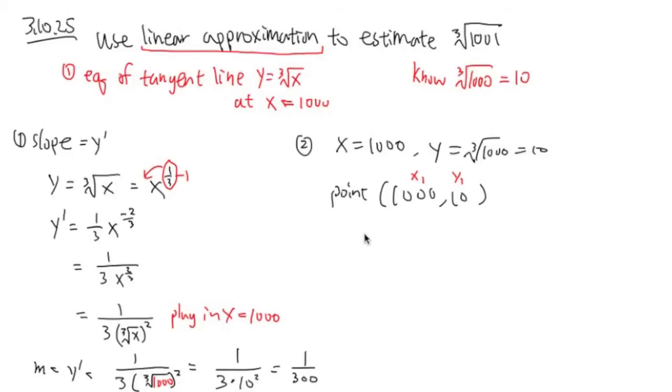And now, we can use the point slope form. y minus y1 equals m times x minus x1. And the y and x stay the same, but you're plugging y minus, the y1 is 10, equals to m is 1 over 300 times x minus x1 is 1,000. Like this.